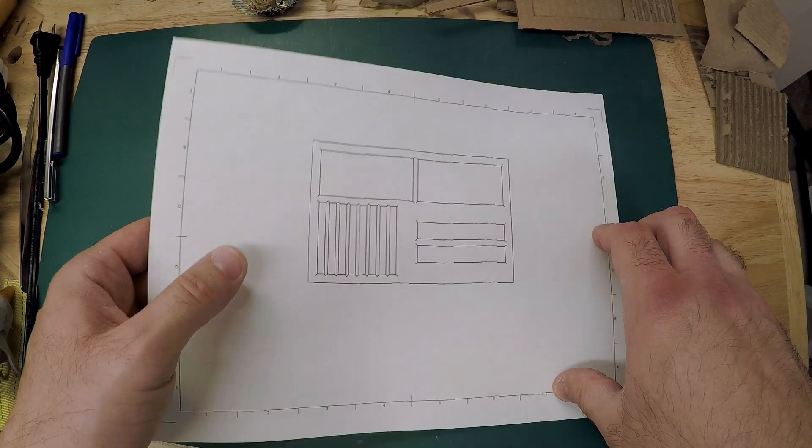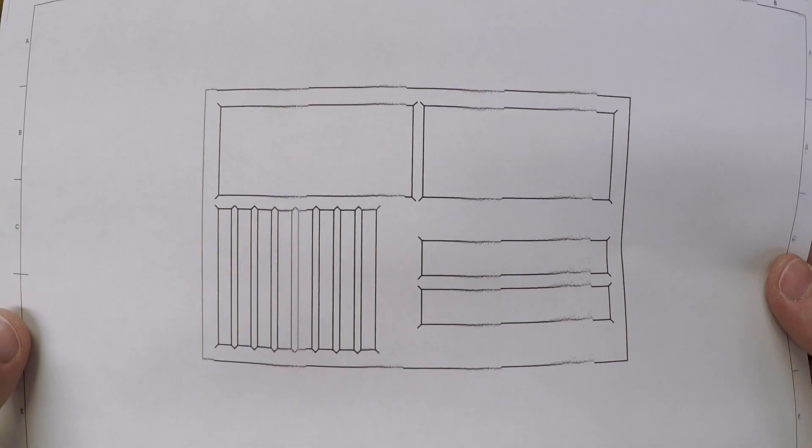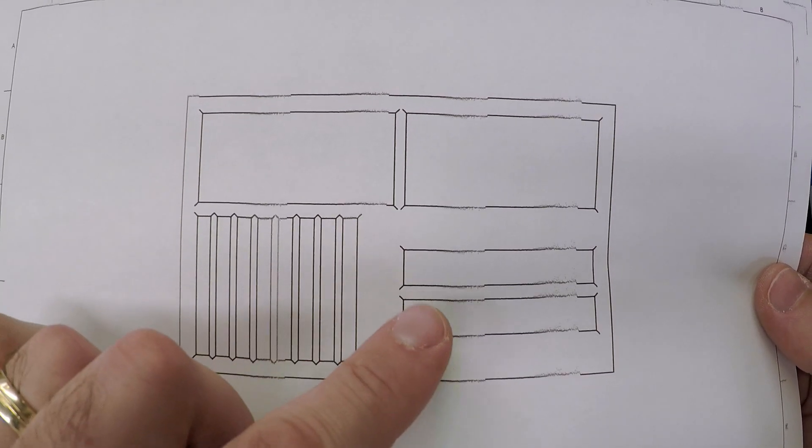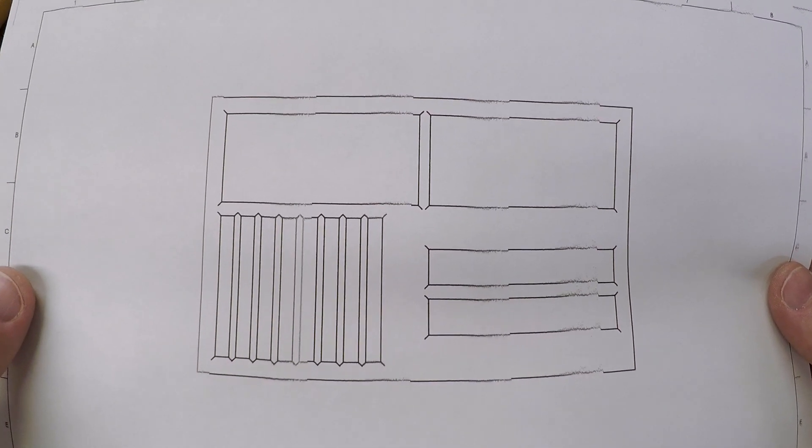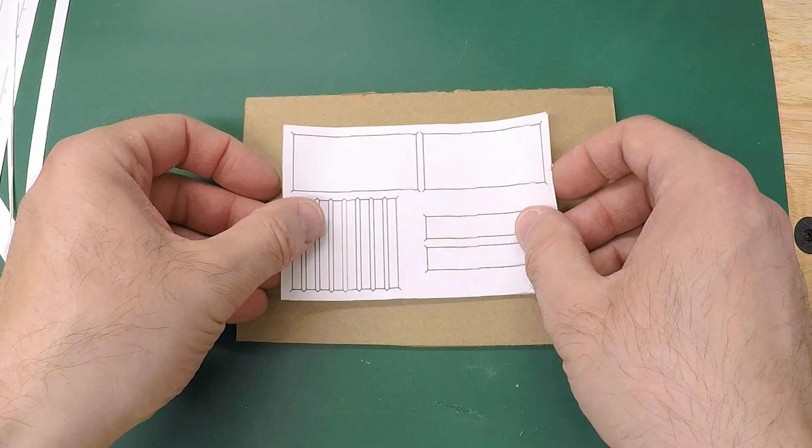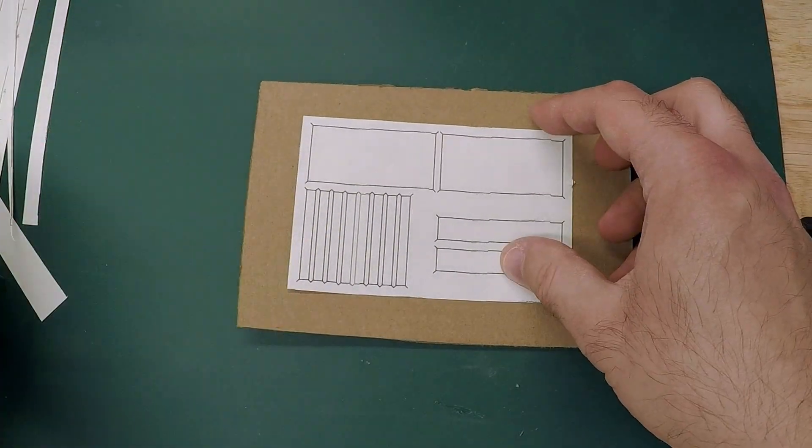Here's some plans that I made in a computer design program called Fusion 360. And this is useful to have if you're going to be making a pinning tray out of wood or cutting board or plastic material, any sort of material where you want to make sure that everything's nice and even and just have some nice guidelines.